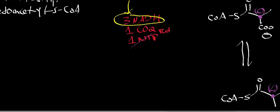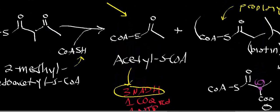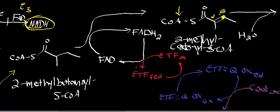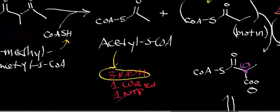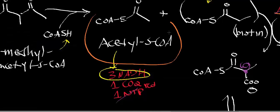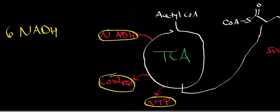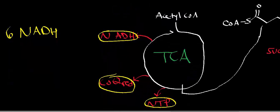Counting reduced CoQs from FAD-dependent oxidations: one from 2-methylbutanoyl-S-CoA dehydrogenase via electron-transferring flavoprotein to ubiquinol, one from acetyl-CoA going through the TCA cycle, and one from succinyl-CoA in the TCA cycle. That gives a total of three reduced CoQs.